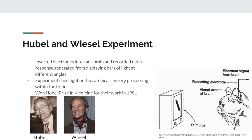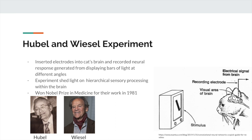They showed stimuli on a screen, and when a bar of light was moved in a certain direction or pattern, the neural response from the recorded neuron would increase. They inserted the electrode in various parts of the cat's brain and found that some neurons are very simple — detecting only a specific feature like an edge in a certain direction — whereas other neurons can detect much more general features, such as any sort of motion across the receptive field.